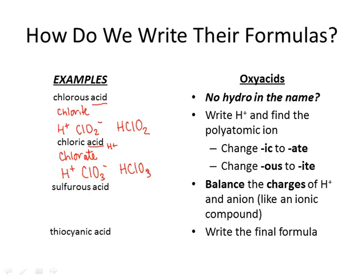Sulfurous acid — again, no 'hydro' tells me it's an oxy acid. -ous came from -ite, so I'm looking for sulfite. 'Acid' tells me there's H+. Sulfite is SO3 with a 2− charge. Since I have 2− and +1, I need two of the +1's to balance out, so I have H2SO3.